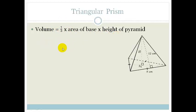Let's look at a triangular prism, exactly the same thing. The volume of a triangular prism is again going to be a third times the area of the base times the perpendicular height.